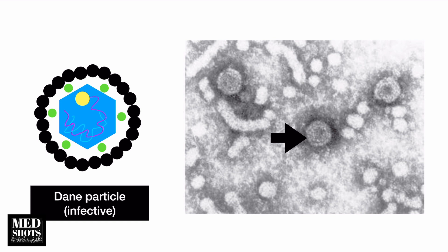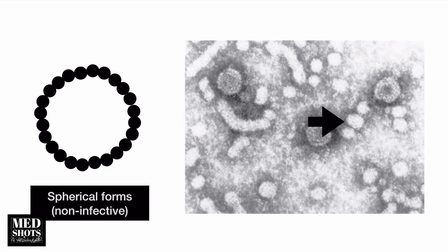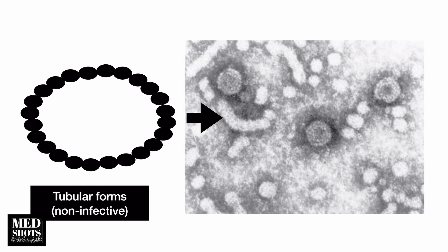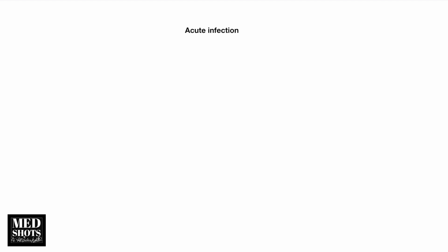Looking at electron microscope pictures: the Dane particle is the complete infective particle. Then we have spherical forms which are non-infectious, and tubular forms which are also non-infectious.